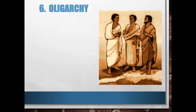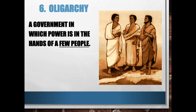Oligarchy is a system that evolved over time. It came about when very few people — a small group — decided they were going to run the show. So if you have power in the hands of a few people, you are living in an oligarchy.